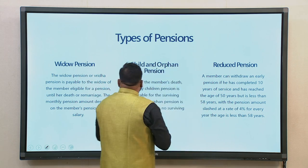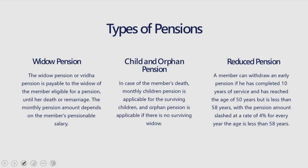Widow pension, also called Vridha pension, is applicable to the widow of a member eligible for pension. The pension is payable until the death of the widow or her remarriage. In case of more than one widow, the pension is payable to the eldest widow. The monthly Vridha pension amount depends on Table C of EPS 1995, and the minimum pension has been increased to Rs. 1,000. The monthly pensionable salary has been increased to Rs. 15,000 post September 2014.